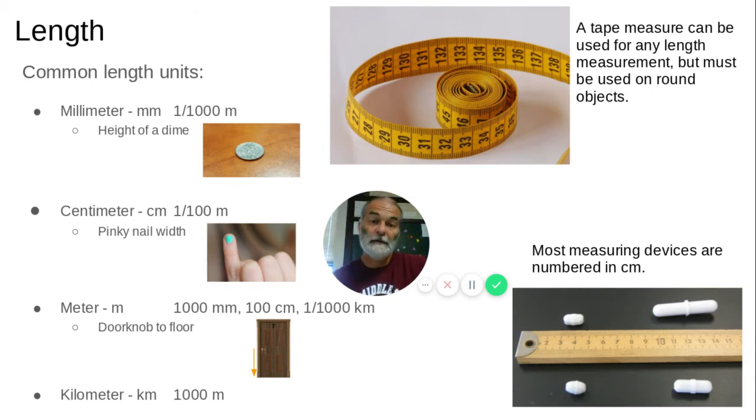So some of the common units, we use millimeters. And if you want to think of a millimeter, it's about the height of a dime. Centimeters is the width of your pinky finger from one side to the other. And a meter is about from the doorknob of a door to the floor. A door is usually about two meters tall. The doorknob is right in the middle. And then a kilometer is 1,000 meters. And if you think of it this way, it's about one half of a mile is one kilometer.